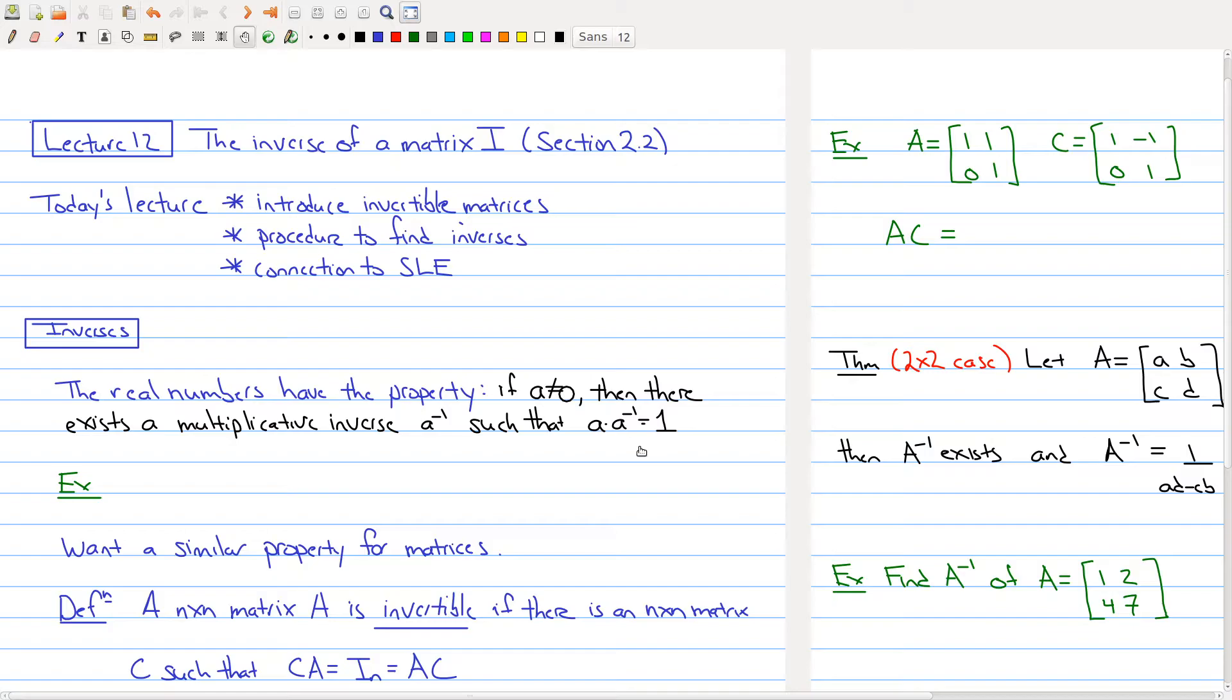As a very simple example of that, let's say I gave you the number 17. What is the multiplicative inverse? The multiplicative inverse of 17 is 1 over 17 since 17 times 1 over 17 is equal to 1.